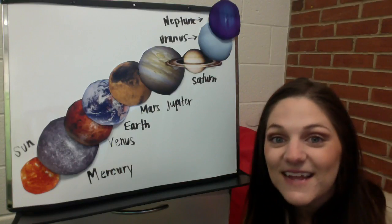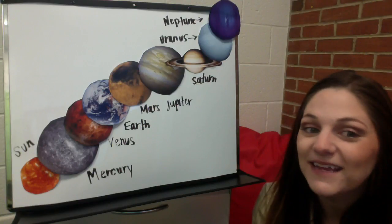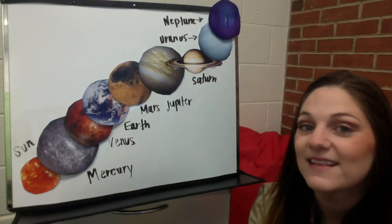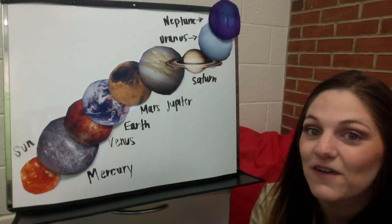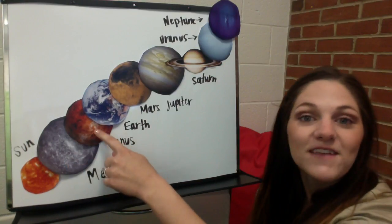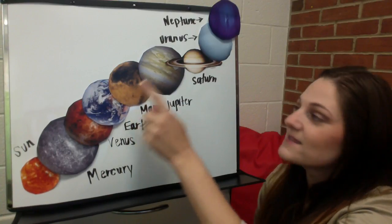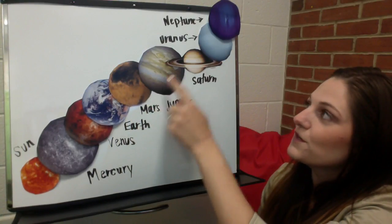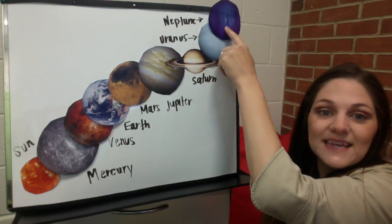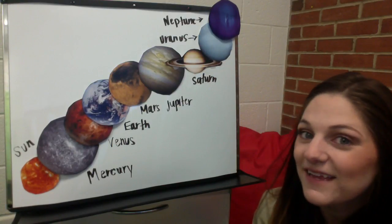The Sun has eight planets. The Sun has eight planets. Let's sing them right now. First Mercury, then Venus, Earth, Mars, Jupiter and Saturn, Uranus, next Neptune. Our Sun has eight planets. Let's sing them right now.